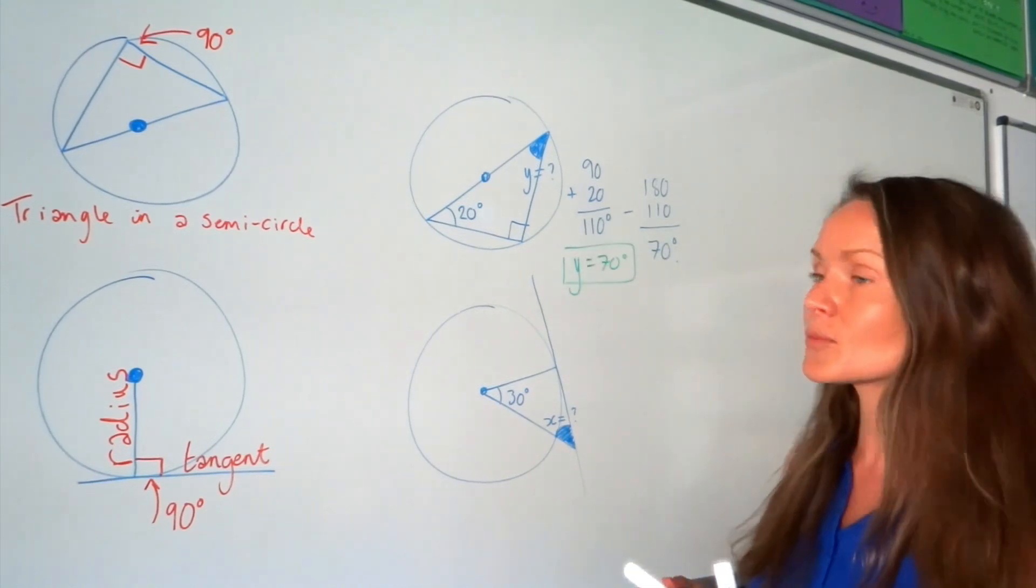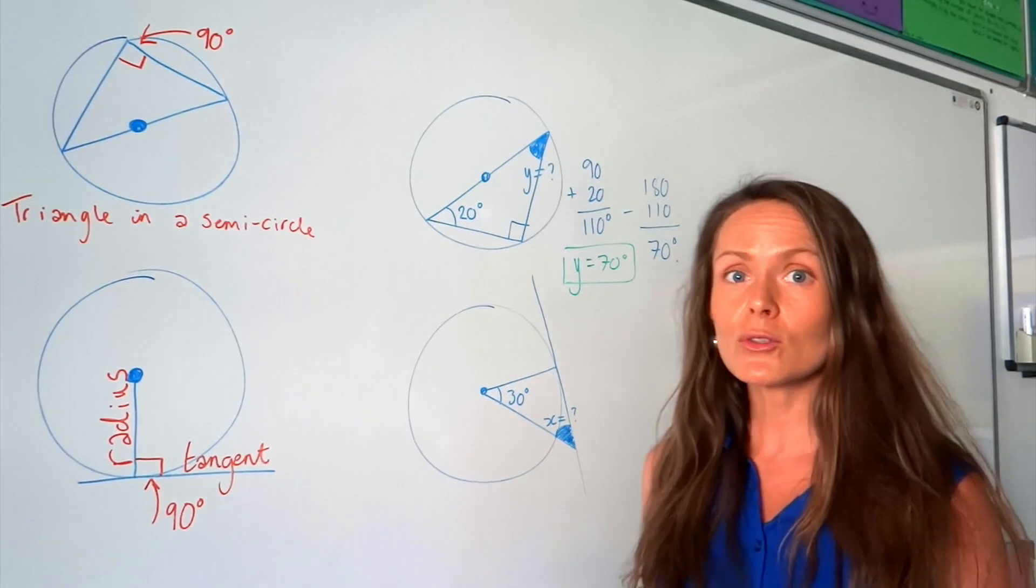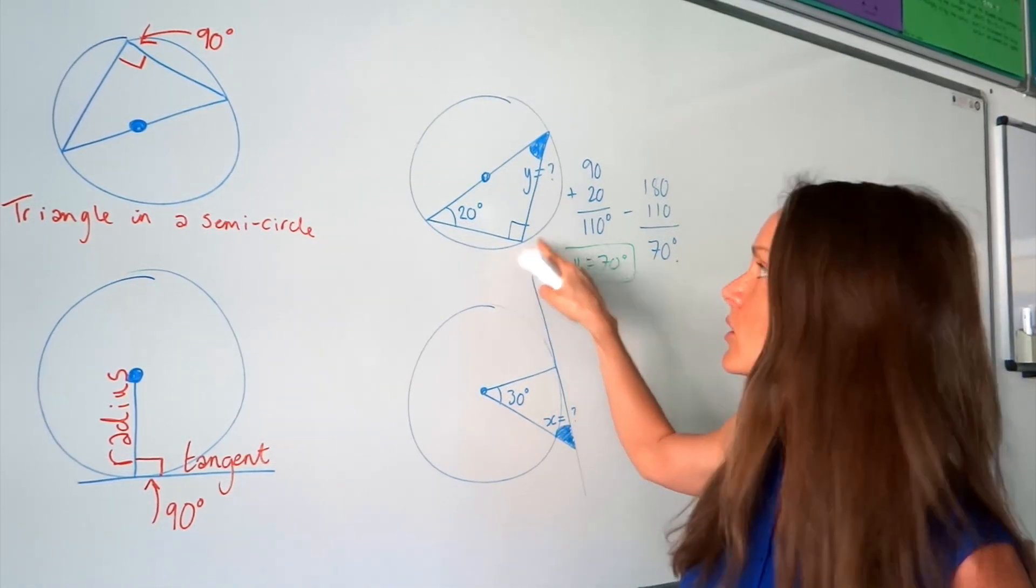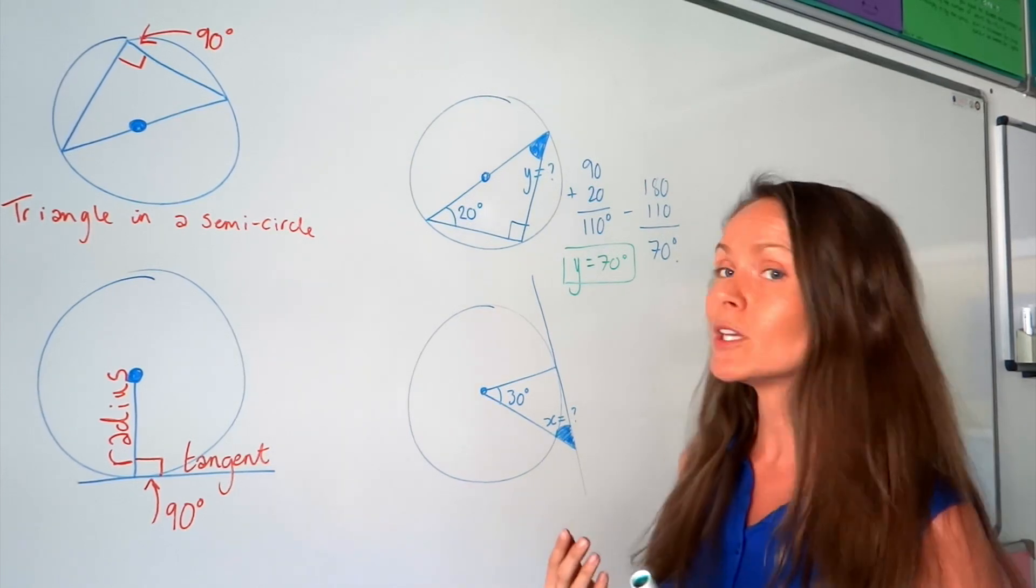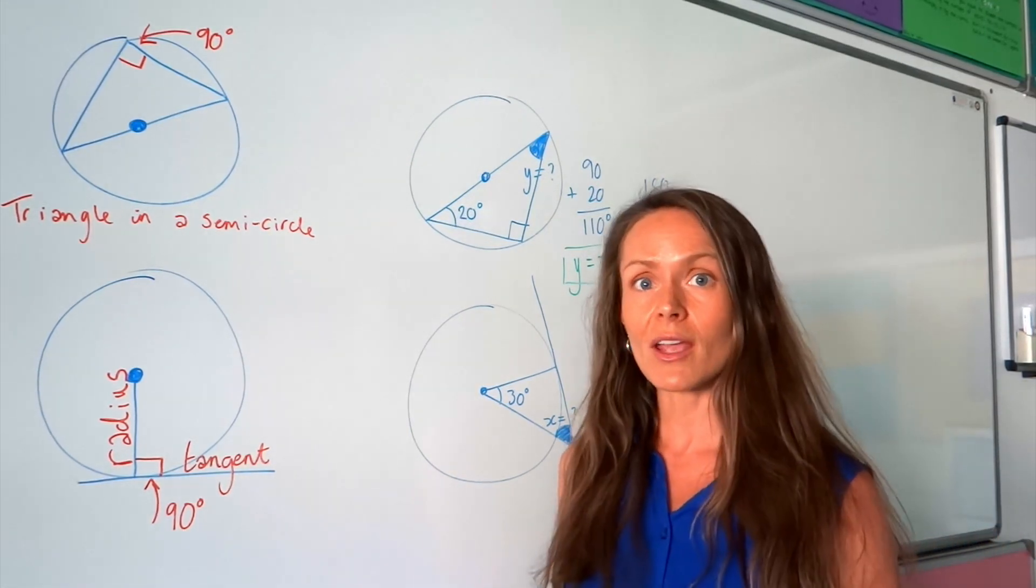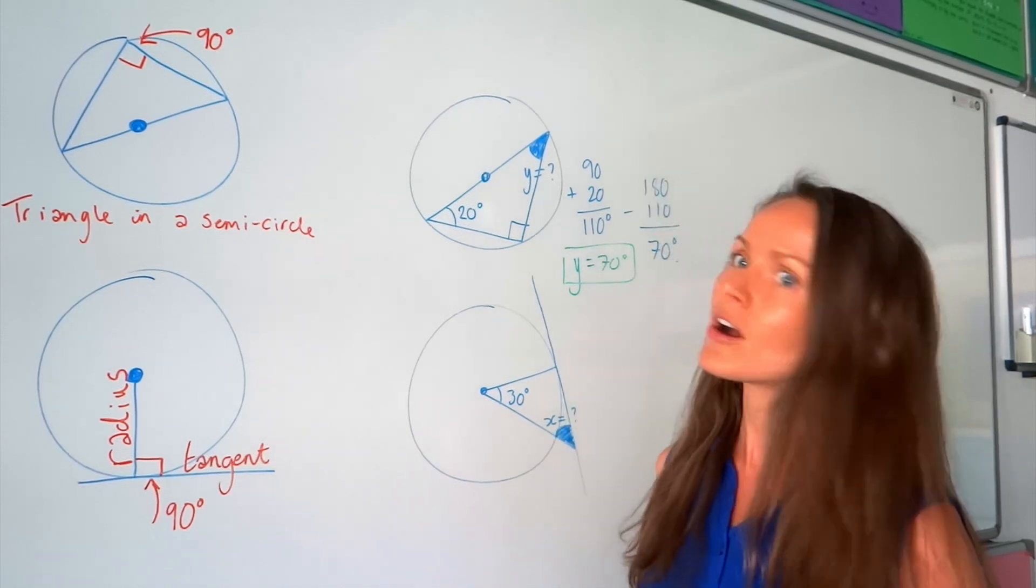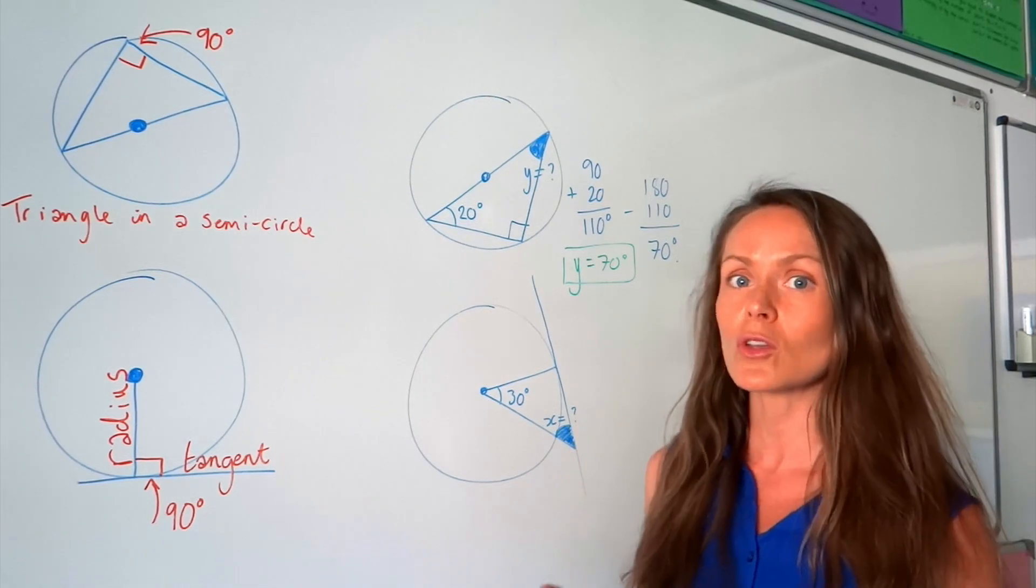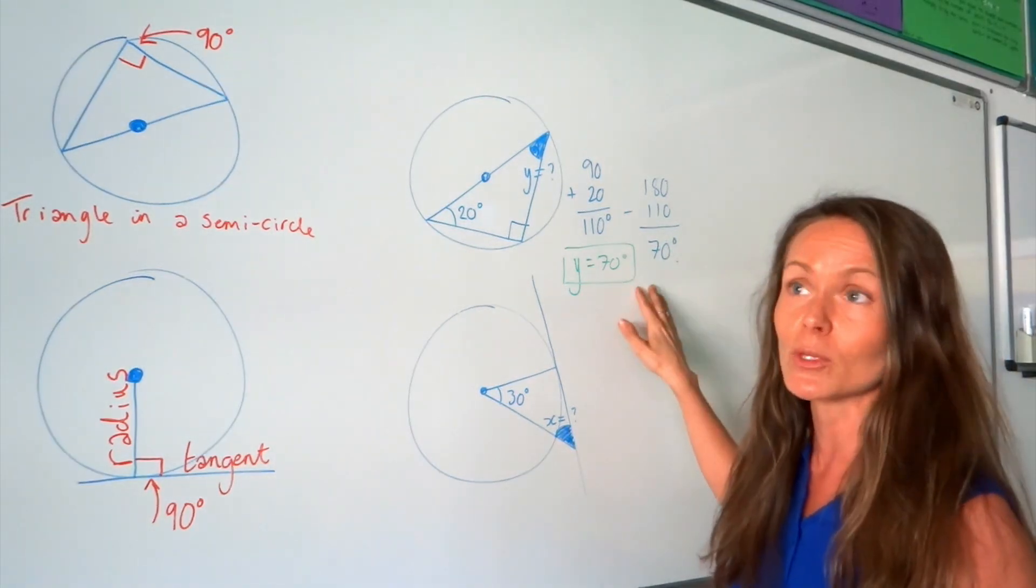And if they ask for an explanation, how did you know that was 70? Well, we use two different rules. You would say, we know this angle is 90 degrees because there's a triangle in a semicircle. And also, we use the rule that in a triangle, the angles add up to 180 degrees. So if you were asked to explain how you work that out, you would need to use those two rules in your explanation, as well as the calculations, which are useful too.